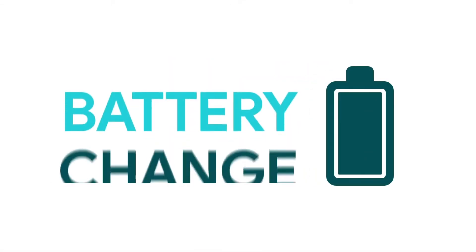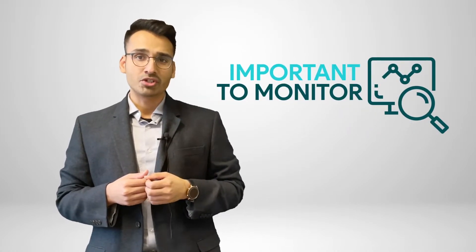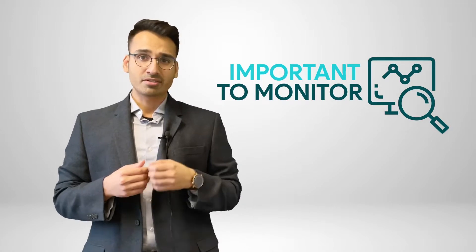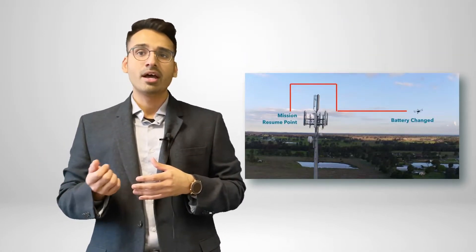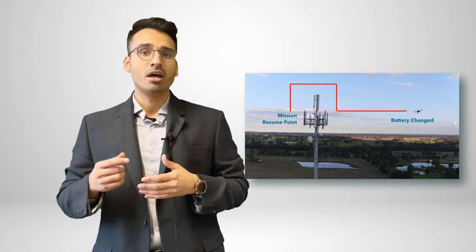Another challenge you will undoubtedly come across is battery change. Battery changes are a critical component to most drone missions. They're especially important to monitor in tower missions. The biggest reason for this is the fact that your drone could run out of battery on the other side of the tower, and therefore the battery resume flight path needs to account for the 3D tower on the way between the takeoff location and the drone's current position.